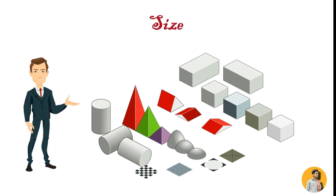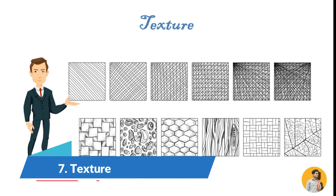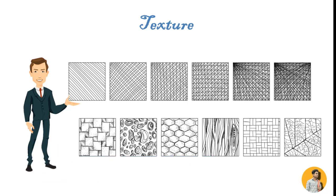Seventh is texture. Texture is the surface quality of a shape like rough, smooth, soft, hard, glossy, etc. There are different types of texture, some are shown in this picture.